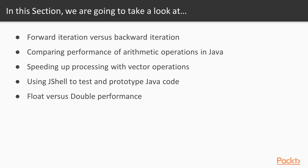Firstly, we'll be focusing on the aspect of forward iteration versus backward iteration. We'll see that the order in which we are iterating over elements is important and has an impact on performance. Then we'll be comparing the performance of different arithmetic operations in Java — division, multiplication, subtraction, and so on.